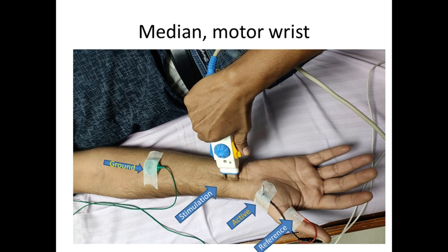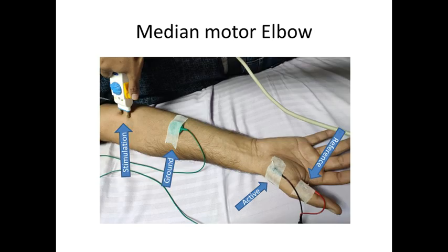Stimulation is also given at the axilla and Erb's point. Latency is the time interval between the stimulation and response, and is usually measured in milliseconds. The normal latency in the median nerve is 3.5 milliseconds. Amplitude is the size of the response, and is measured in millivolts.